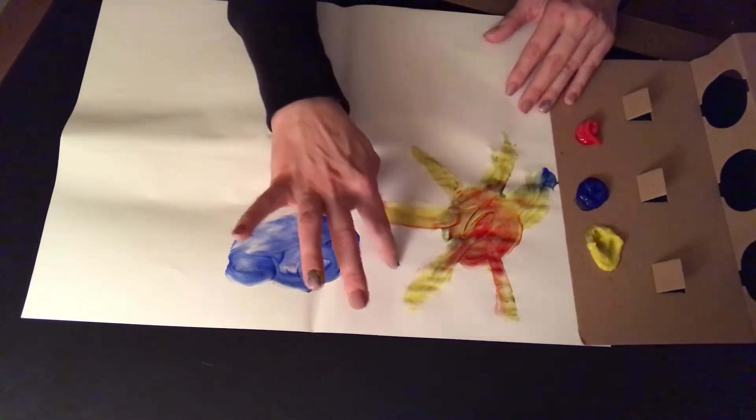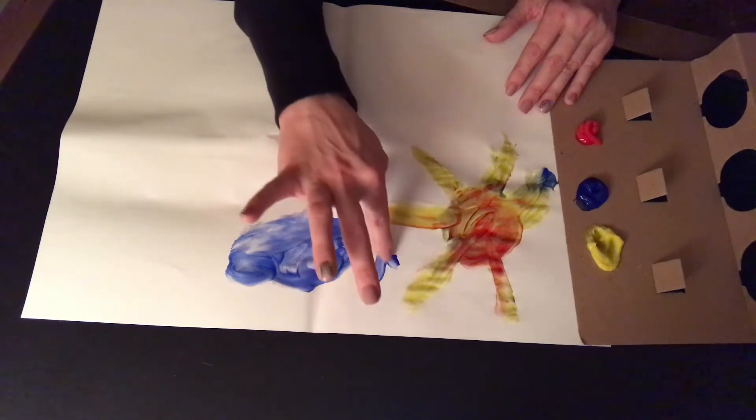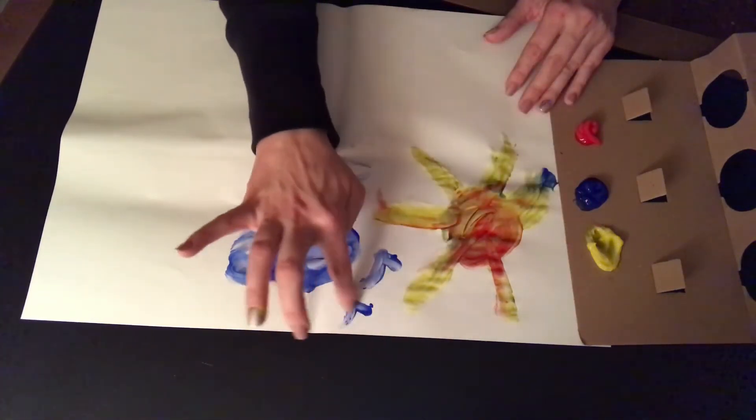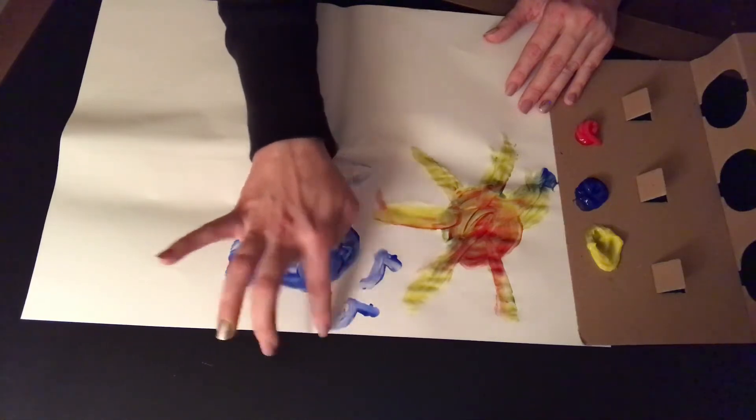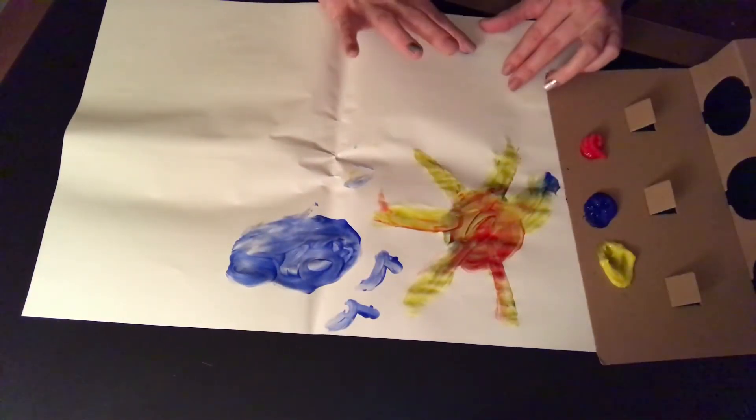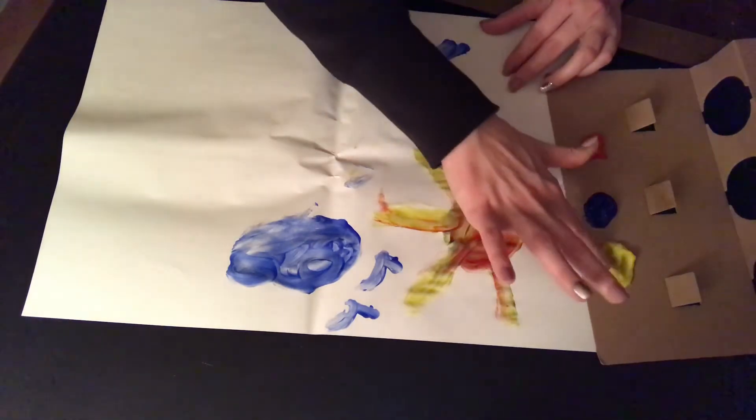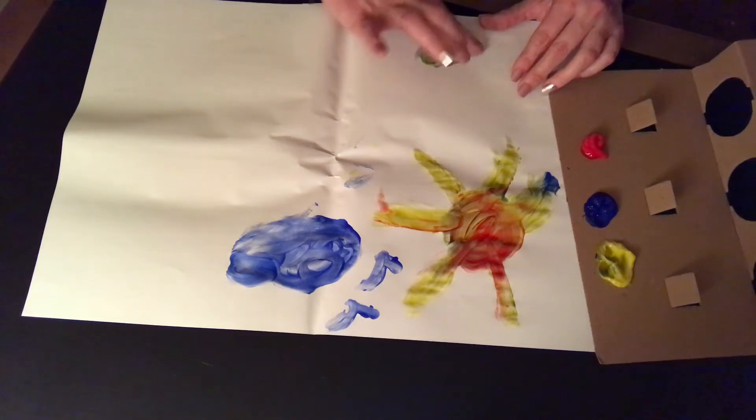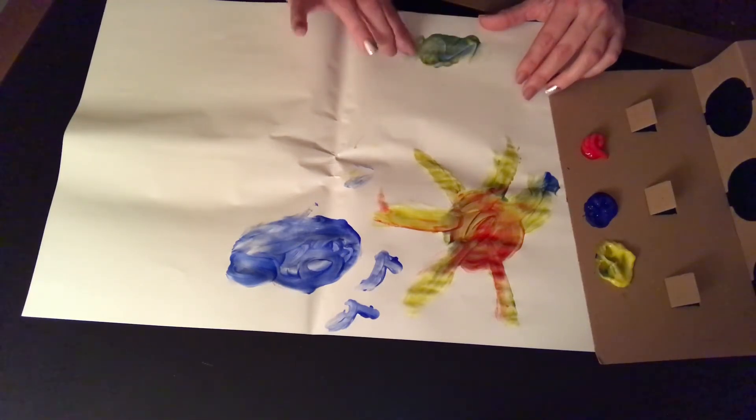I'm going to put a little bird here. Those two little birds up in the sky. Maybe I'll make a little bit of green grass. If I can actually mix these together and make a greenish color. I'm going to put some green grass down here.